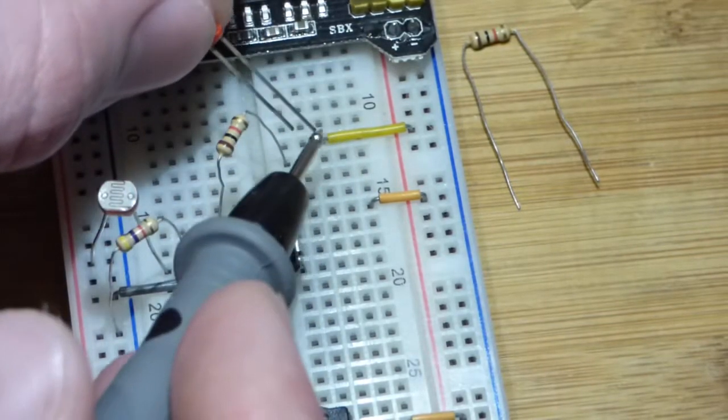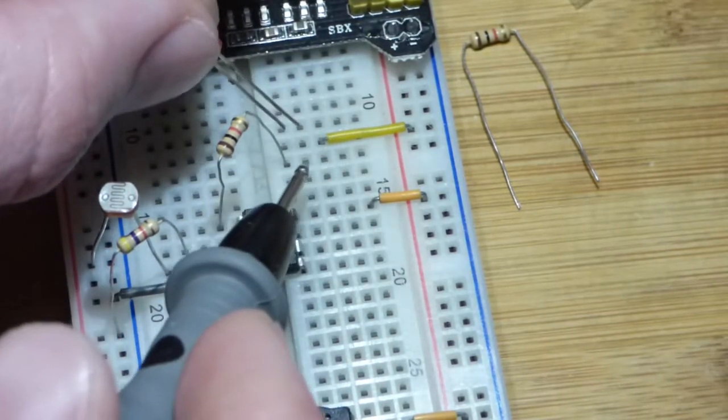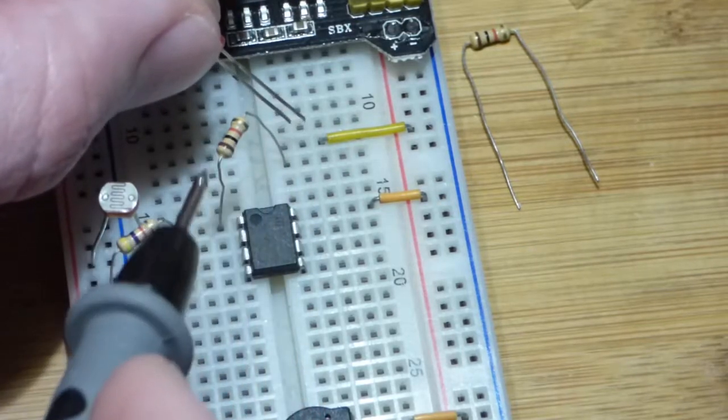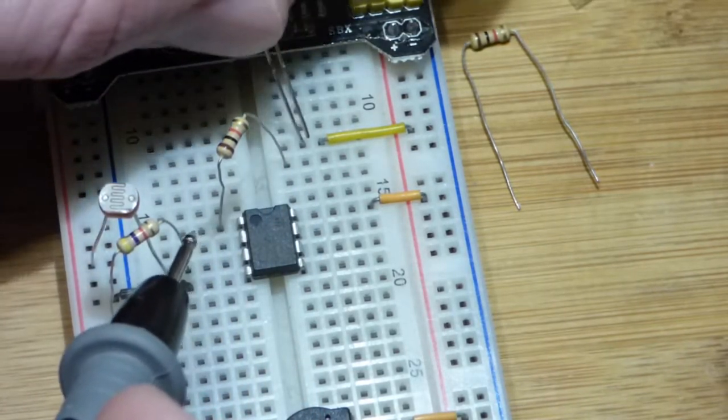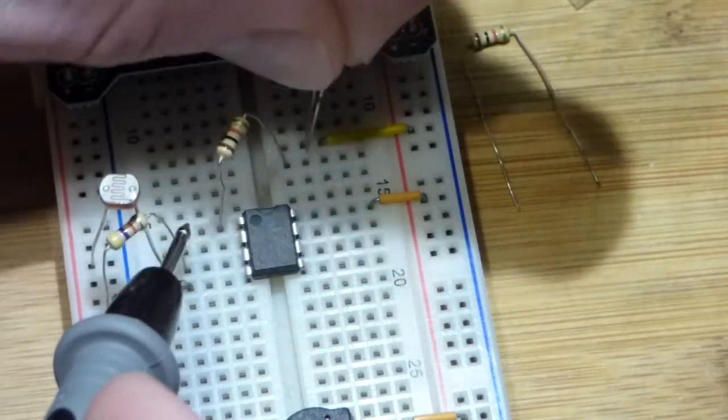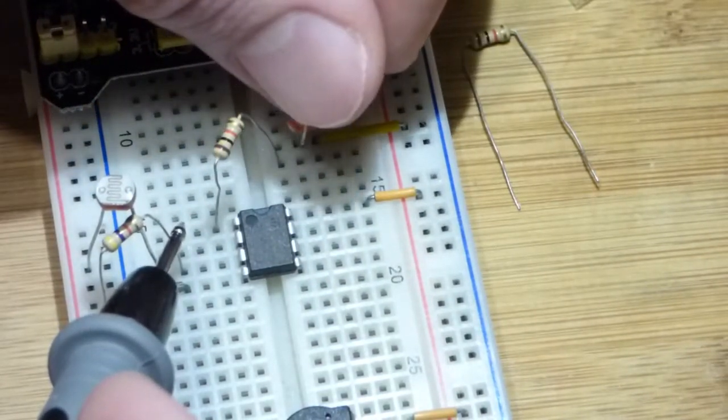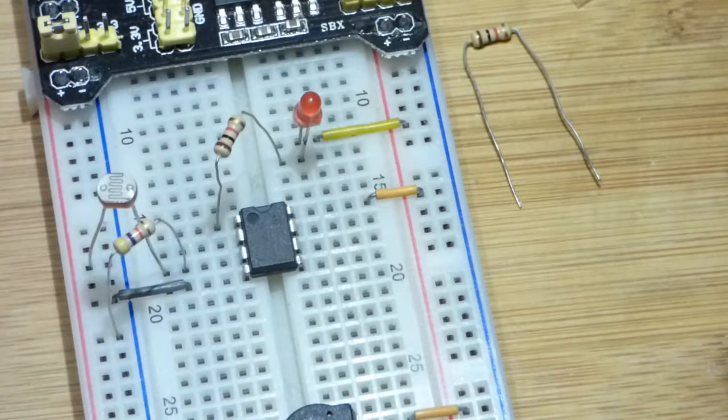So we have the long lead, the anode of the LED we have to put up here. Short lead, the cathode, goes to the resistor, which comes to the output. We need to put it that way so it'll conduct. If we put it the other way, all it will do is block current.